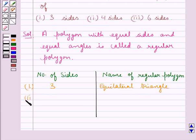A polygon with 4 sides is called a square, and a polygon with 6 sides is called a regular hexagon.